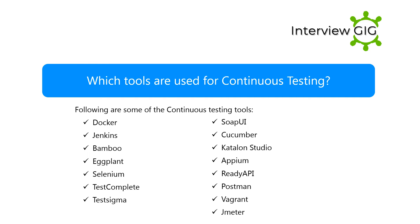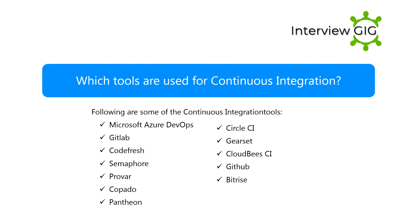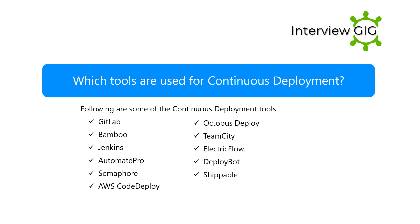Which tools are used for continuous integration? Following are some of the continuous integration tools: Microsoft Azure DevOps, GitLab, Codefresh, Semaphore, ProVar, Copado, Pantheon, CircleCI, Gearset, CloudBees CI, GitHub, and Bitrise.